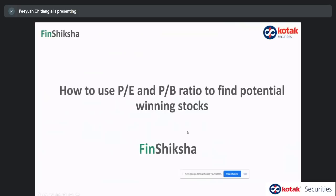In today's session, we're going to talk about how to use price to earnings and price to book ratio — PE and PB ratios — to find potentially winning stocks. These are ratios we would all have heard about, seen in newspapers and media reports. They are simple to use and calculate, but that simplicity sometimes creates a problem in terms of how we approach and use these ratios, and how we go about finding out whether a company is undervalued or overvalued.